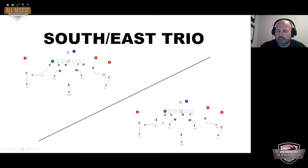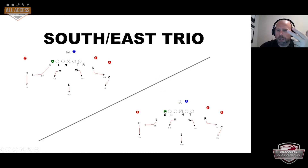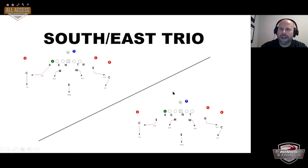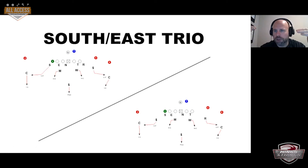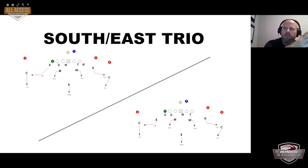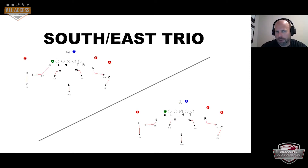Here we said set it field, so we're setting it to the field side. Against this formation — same formation, same picture — two different calls. Now we have a C-gap defender who can play heavy, who can play crunch, who can play crash, who can stem into it. The C-gap is being defended in a completely different way, and this C-gap is now being defended by a linebacker. The way that teams want to attack the C-gap is completely different based on which player is the C-gap defender. We have two really simple calls — set the point to the pass strength or set the point to the field — and we get two completely different looks against this particular formation.